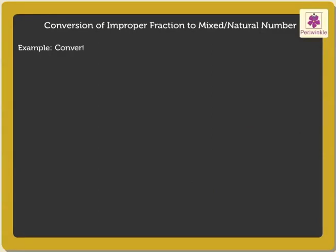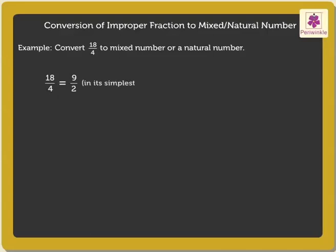Example 2. Convert 18 upon 4 to a mixed number or a natural number. We again follow the same steps, but prior to that, we will convert the given fraction into its simplest form. The simplest form of 18 upon 4 is 9 upon 2.